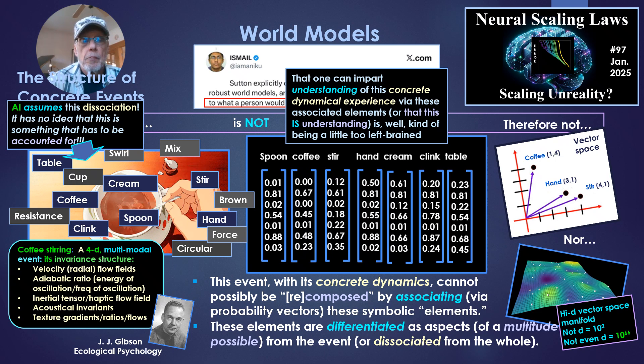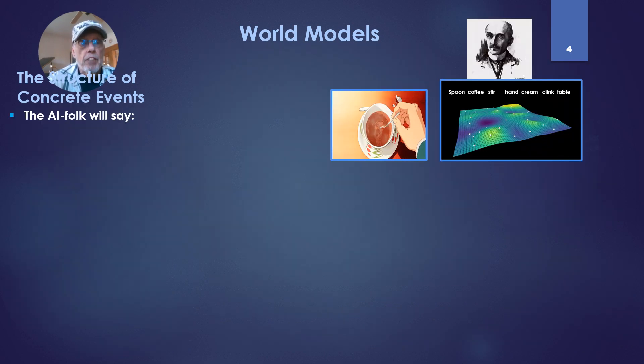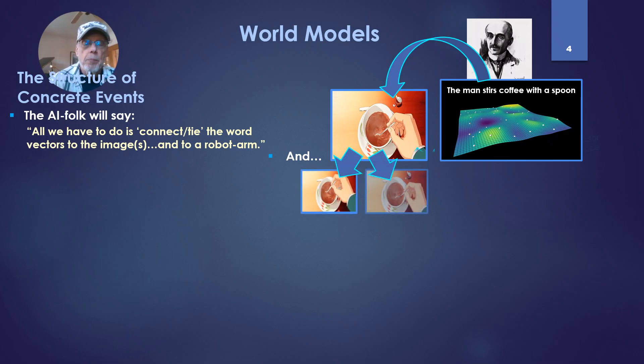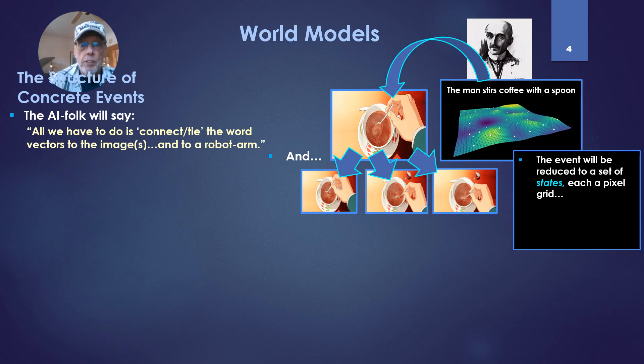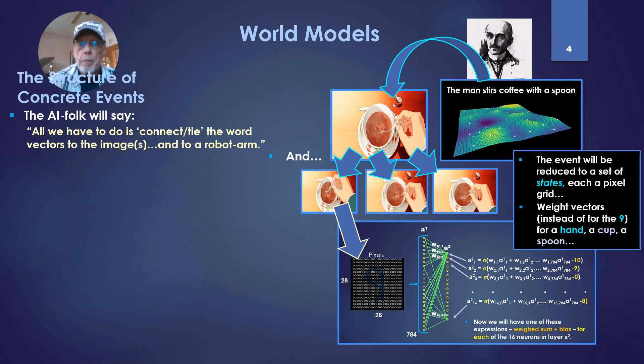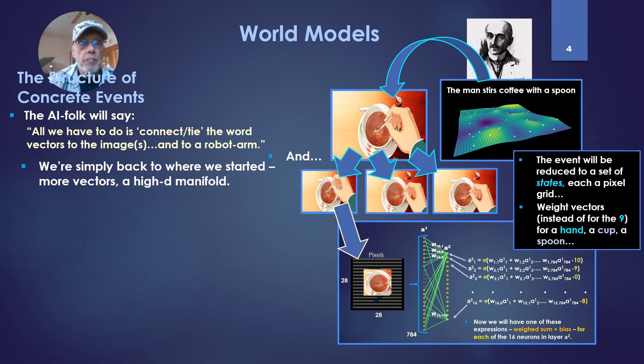And so, of course, the AI folk will say, well, all we have to do is connect and tie the word vectors, our high-dimensional vector space there, to the images, and ultimately to a robot arm, and then we'll have understanding. Say, the man stirs the coffee with the spoon, or have the robot stir the coffee with the spoon. But all we're going to do is break that dynamic, continuously transforming event into a series of states. Each is a pixel grid. In other words, there's no actual image there, it's just a correlated set of pixels. And instead of the nine, as we're categorizing, classifying, trying to learn nines, we'd have coffee stirring in there. We'd have vectors for the coffee stirring. So we're simply back where we started, more vectors, just another high-dimensional manifold.